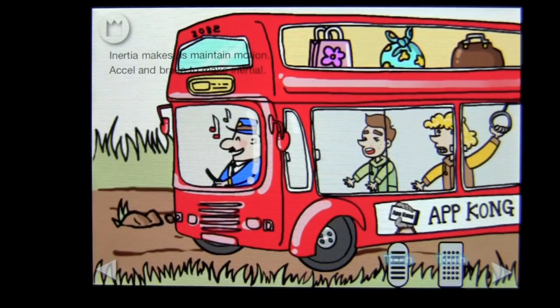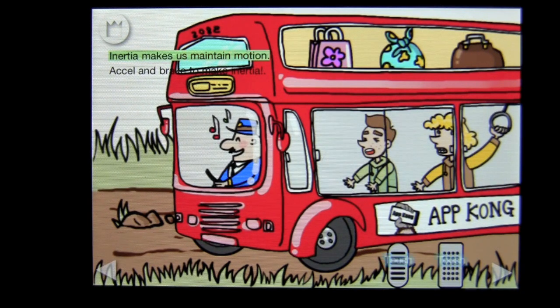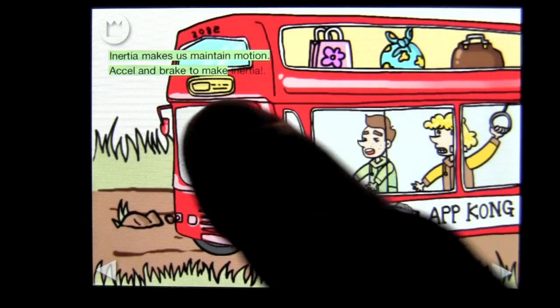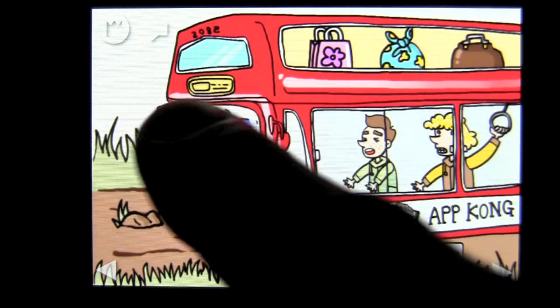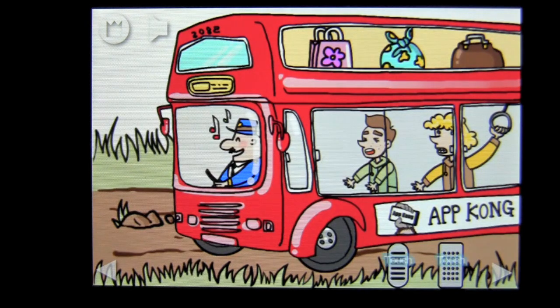Now we'll tap on inertia and gravity. Inertia makes us maintain motion. Excel and brake to make inertia. Notice how the words light up to help the kids understand and comprehend what is being read to them.